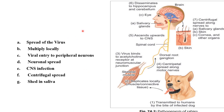Spread of the virus: it multiplies locally, then enters peripheral neurons and spreads centripetally to the CNS. It binds to acetylcholine receptors at the neuromuscular junction (NMJ), then travels in a retrograde fashion through the axon. Centrifugal spread along motor nerves leads to the dorsal root ganglion, ascending to the CNS and disseminating to the hippocampus and cerebellum. Then centrifugal spread occurs along nerves to salivary glands, skin, cornea and other organs.